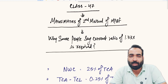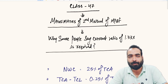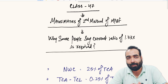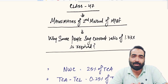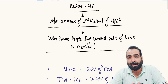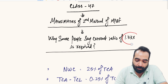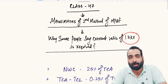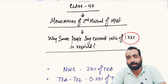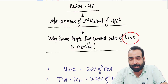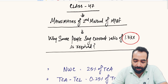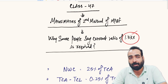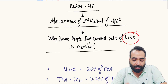Welcome back, friends, to class number 47. In the previous video we discussed MPBF Method 2 in detail, and now in this video we will try to explore the formula a bit mathematically. Many of you must have heard that for calculating eligibility under MPBF Method 2, your current ratio should be minimum 1.33x. We will try to prove mathematically how this 1.33x figure is derived using MPBF Method 2.